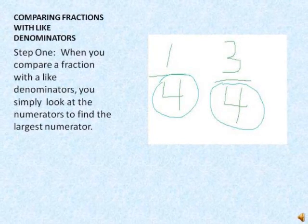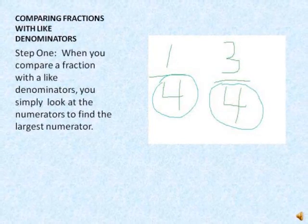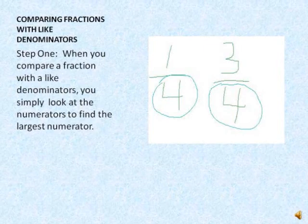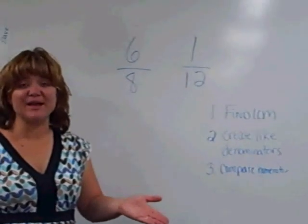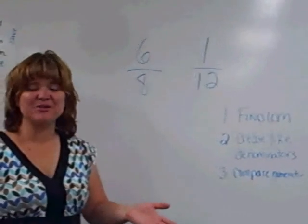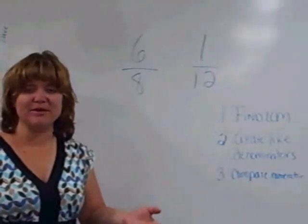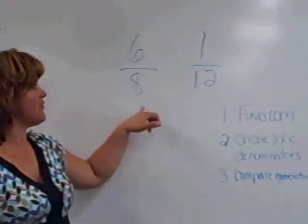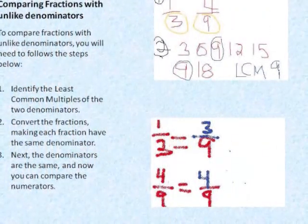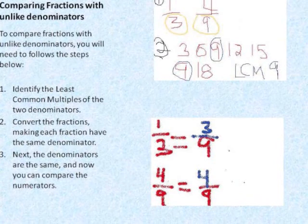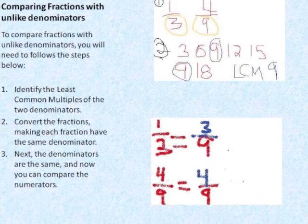So when you compare fractions with like denominators, just simply look at the numerators and you'll be able to find your answer. Earlier today, we learned how to compare fractions with like denominators. But what happens when you get a fraction with 6 eighths and 1 twelfth, or a fraction with 1 third and 4 ninths? Your first step is to find a least common multiple.